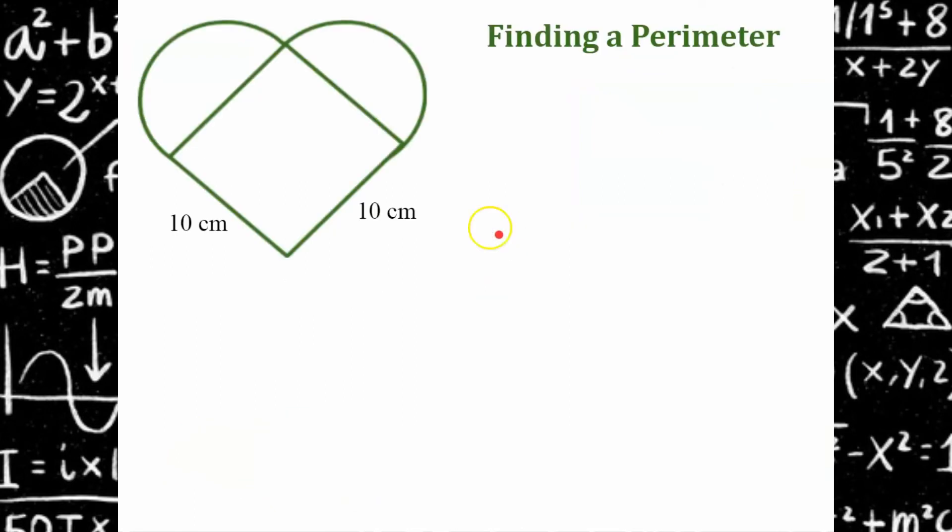Here's another one for you to try. You have two semicircles here and a square. I know it's a square because these sides are congruent, so that means these sides are also 10 centimeters. Go ahead and hit pause. Come back and hit play when you're ready to check your work.